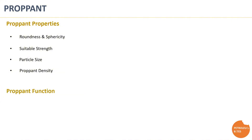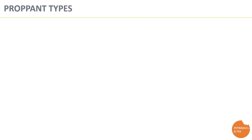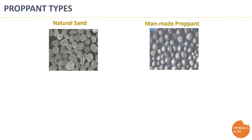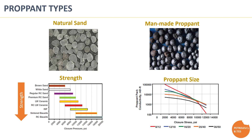The proppant has two main functions: first, to support and keep the created frack open and prevent formation closure; and second, to provide high frack conductivity that eases formation fluid movement into the wellbore. There are two main types of proppant: natural sand and man-made proppant. The right proppant selection is essential for optimizing well performance. It depends mainly on the expected downhole stress to which the proppant will be subjected and the required proppant pack permeability under the same in-situ stress.